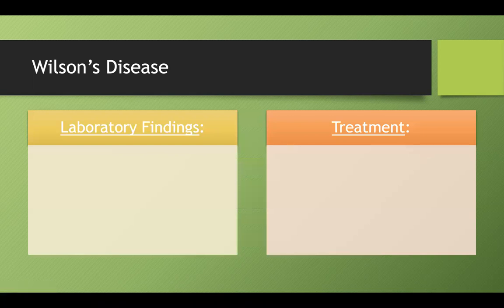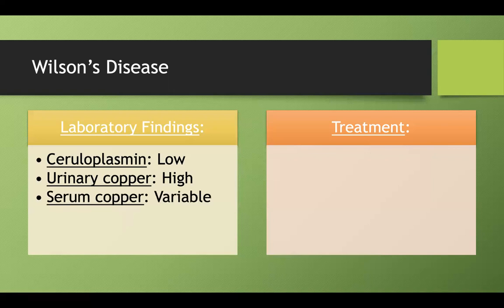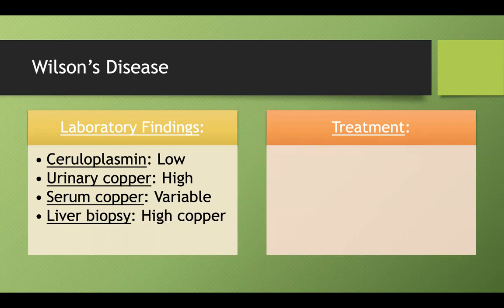For laboratory findings in Wilson's disease, it can be tempting to simply measure serum copper levels, like we did with serum iron in hemochromatosis. However, it's actually better to measure serum ceruloplasmin levels — that's the best lab test to diagnose Wilson's disease. Urinary copper will usually be elevated, while serum copper is variable, which is why we can't reliably use it. The gold standard is a liver biopsy, which would show high copper levels.